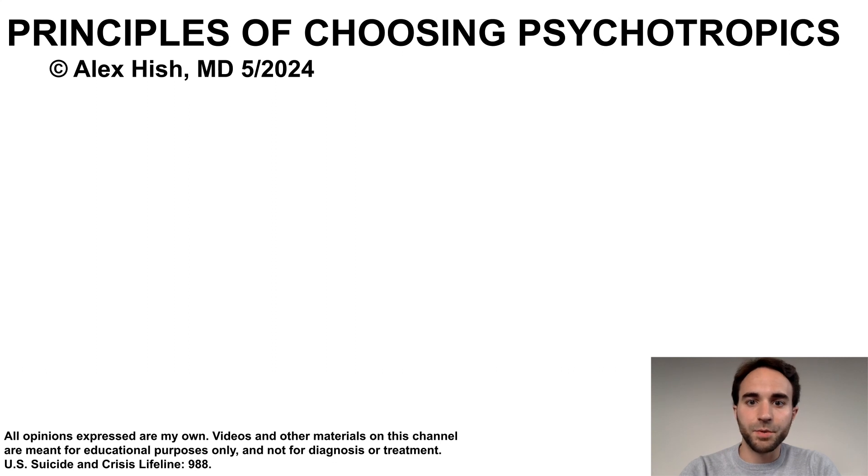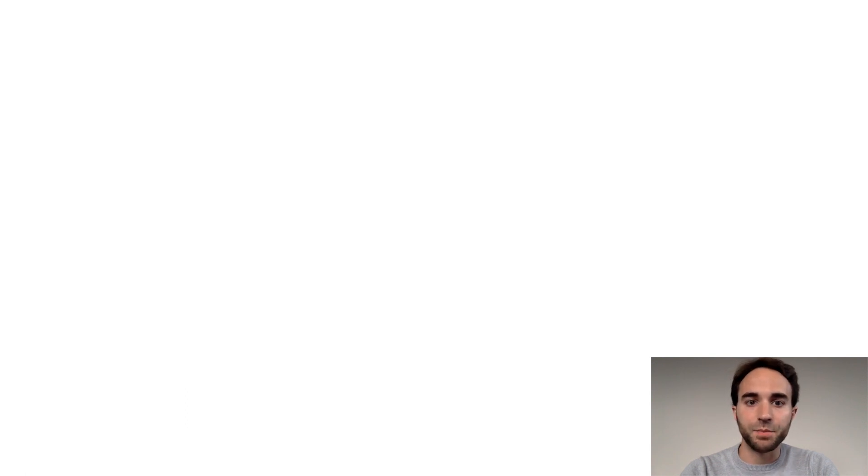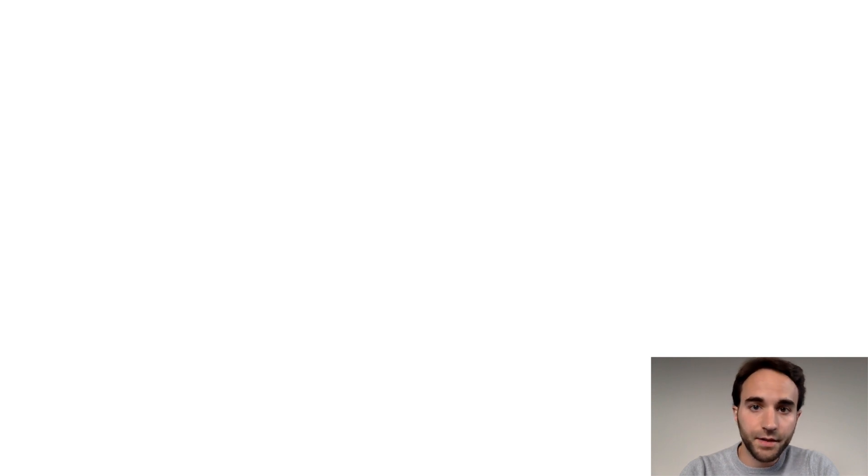This talk is about the fundamental principles involved in choosing psychotropic medications to treat mental illness. I'll outline seven principles that I consider to be universal for making decisions about medication treatment for most psychiatric illnesses and for most types of psychotropic medication. This talk draws significantly from my personal experience, and different experts may have different views on the topic. I'll outline each of the seven principles in order of importance.